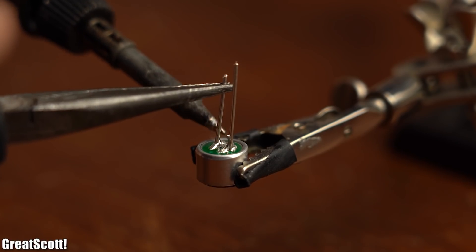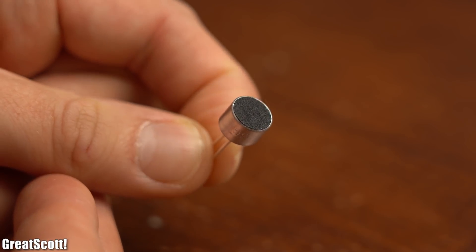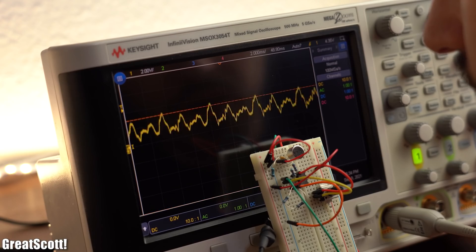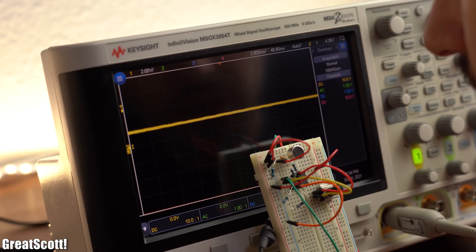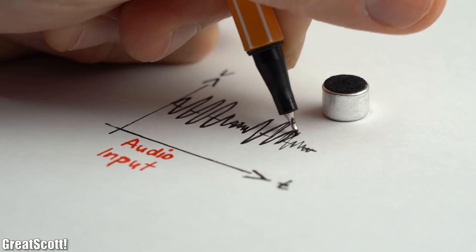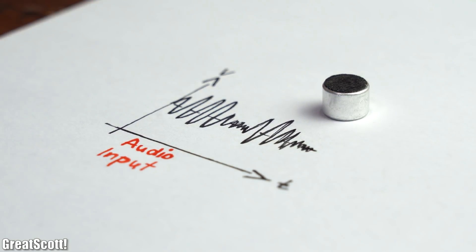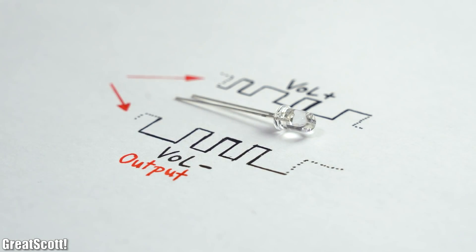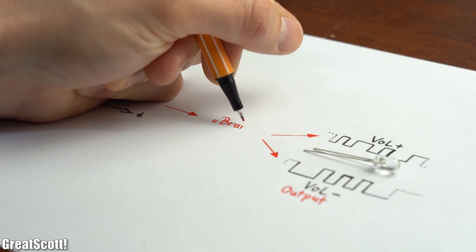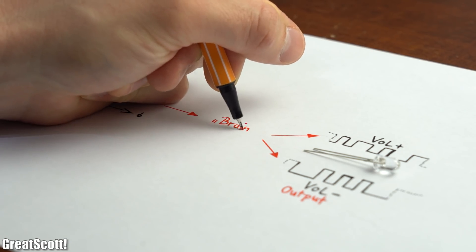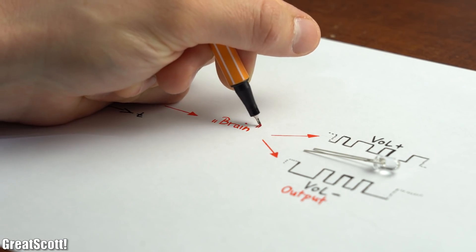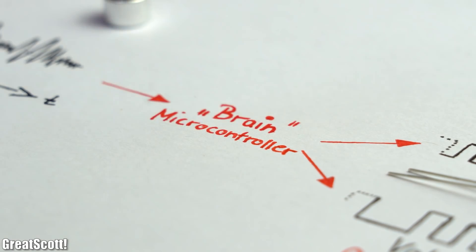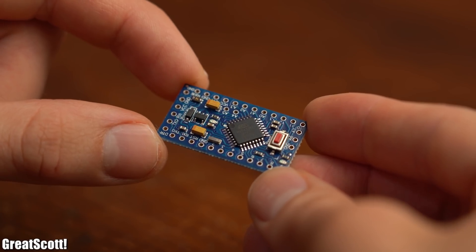For sound measurement, all we need is an electret microphone which, in combination with a suitable amplifier circuit, can output the sounds it is currently hearing. That means we have an input in the form of a voltage signal and two possible outputs also as voltage signals. All we need in the middle is something that processes the input audio information and decides when to lower or raise the volume — and of course I went with a microcontroller for this job, an Arduino Pro Mini to be specific.